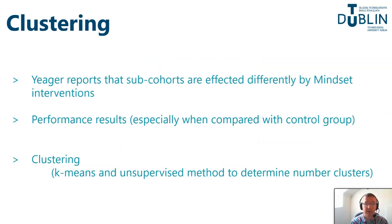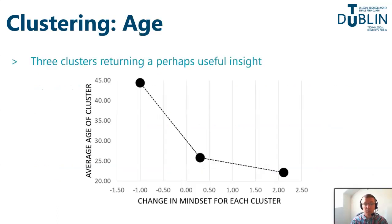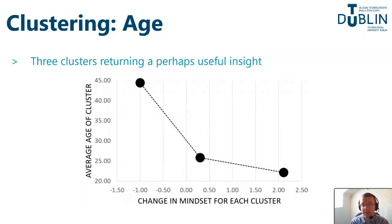To examine the second research question, we looked at Jaeger's reporting that sub-cohorts may be affected differently by mindset interventions. We introduced clustering to the analysis of stage one and stage two data, using k-means and an unsupervised method to determine the number of clusters. When we ran automatic clustering using age and change in mindset, three clusters were determined. While acknowledging these changes were not statistically significant, the insight was that younger students seemed to show an increase in mindset, whereas older students actually seemed to see a decrease in mindset, potentially showing that some cohorts are affected significantly differently than others.